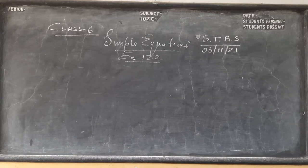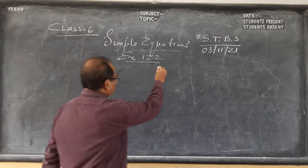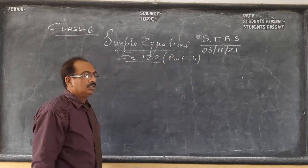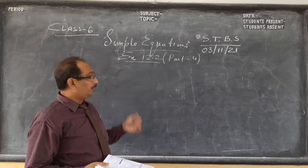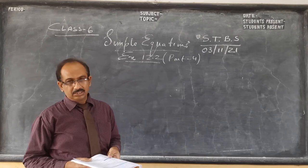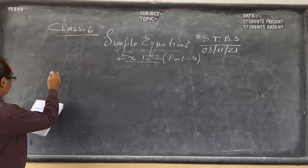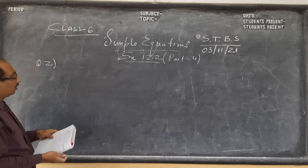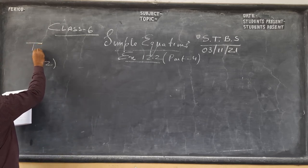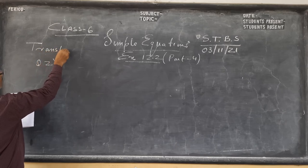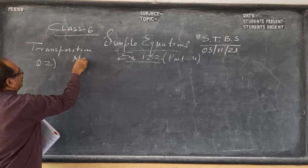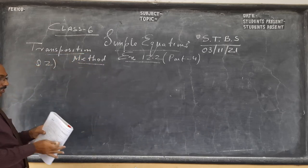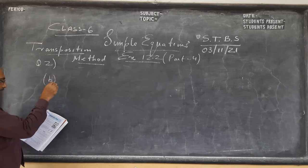Hello students, today we come to the concluding part - Part 4 of our video lesson on simple equations. In the beginning we have seen the concept and how it comes in three different ways. Here what we are using is the transposing method. Transposition means that we shift to the other side of the equal to sign.